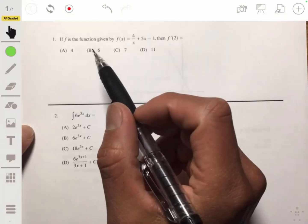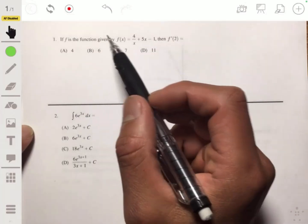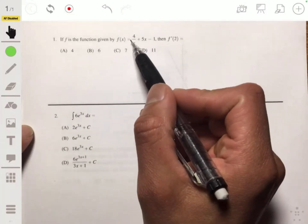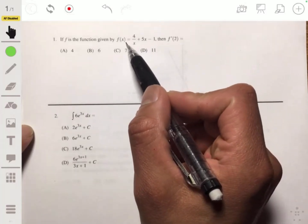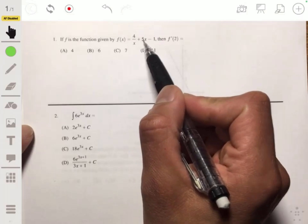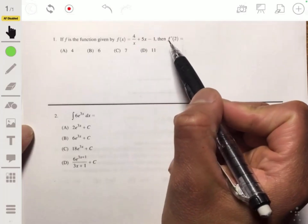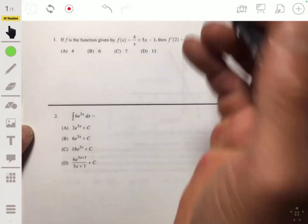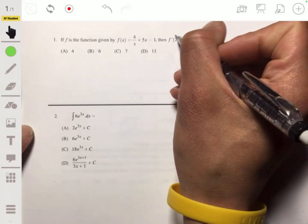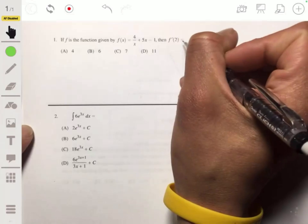Alright, so starting off with problem one, we have that the function f is given as the equation f(x) = 4/x + 5x - 1, and we have to find f'(2). So this is pretty simple. You just have to find the derivative of this and then plug in 2.